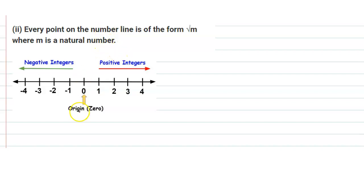Let's look at the number line. This is the number line. The number line has positive integers on the right side and negative integers on the left side, and in the center we have 0 which is the origin.